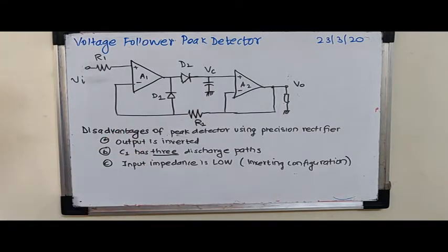C1 has three discharge paths. The third disadvantage is that the input impedance is low, if you recollect that it is an inverting configuration.